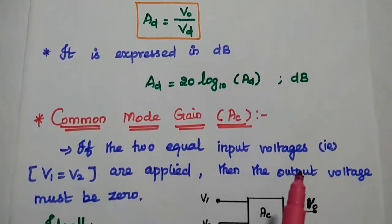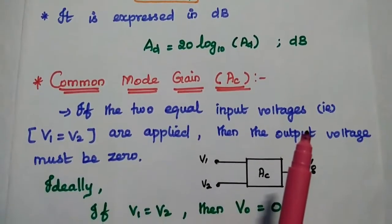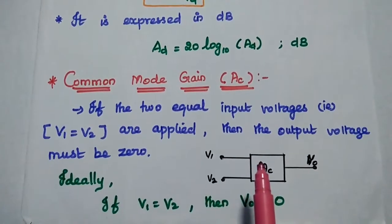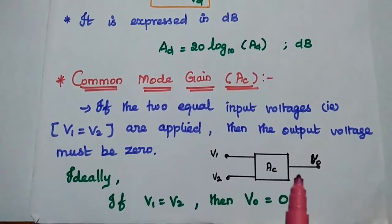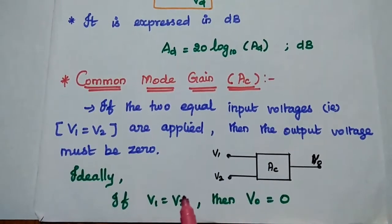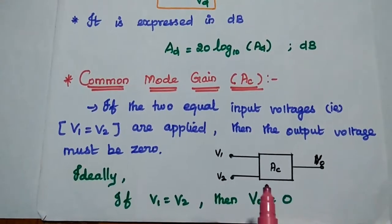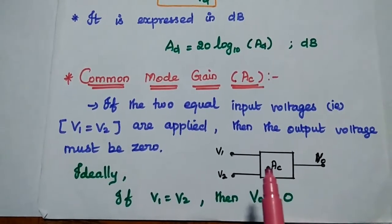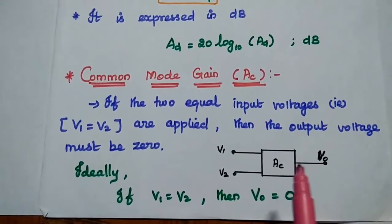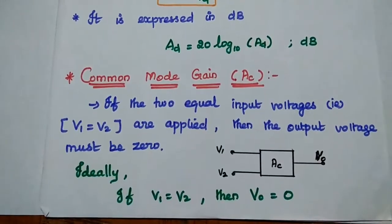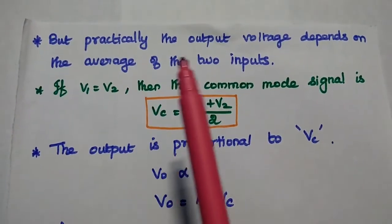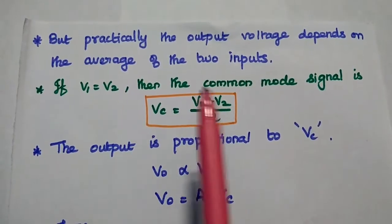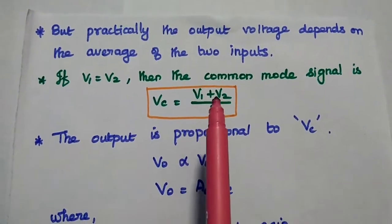The next one is common mode gain. In this case, we have to consider both the inputs as equal. Whenever we apply two equal input voltages to this differential amplifier, the output voltage must be 0. Ideally, if V1 is equal to V2, then V0 is equal to 0. But in practical case, the output voltage depends on the average of two input signals.